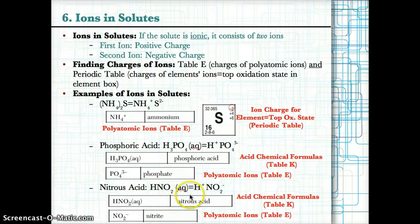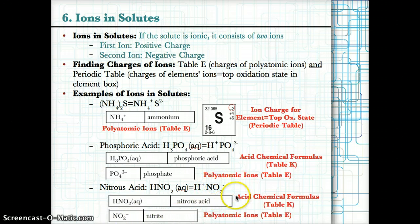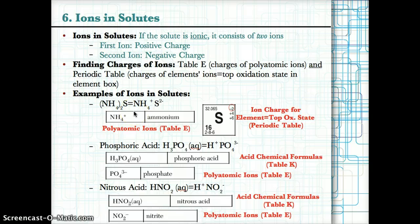For nitrous acid, look it up on table K: it's listed as HNO₂(aq). Splitting into two ions: H⁺, because H's top oxidation state on the periodic table is +1, and NO₂⁻, because NO₂ is listed on table E as nitrite with a charge of −1. Use table E for polyatomic ion charges and the top oxidation states on the periodic table to find charges of elements when they form ions.